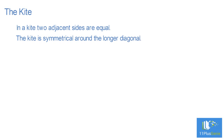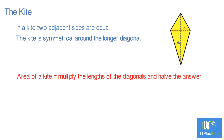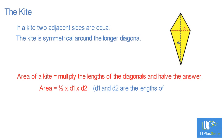In a kite, two adjacent sides are equal. The kite is symmetrical around the longer diagonal. To work out the area of the kite, we multiply the lengths of the diagonals and halve the answer. In formula form: area equals half times D₁ times D₂, where D₁ and D₂ are the lengths of the diagonals.